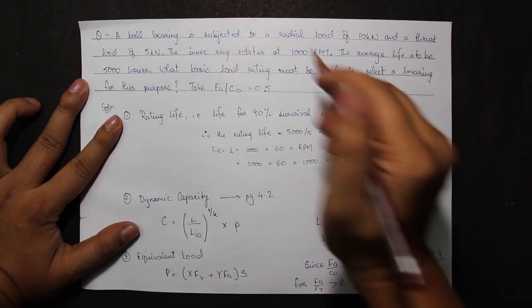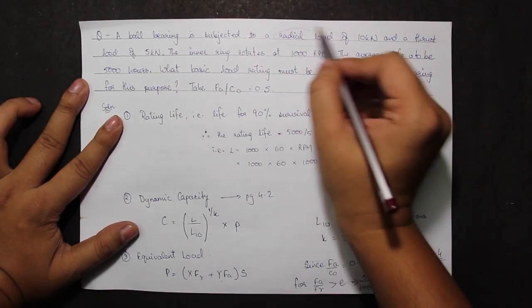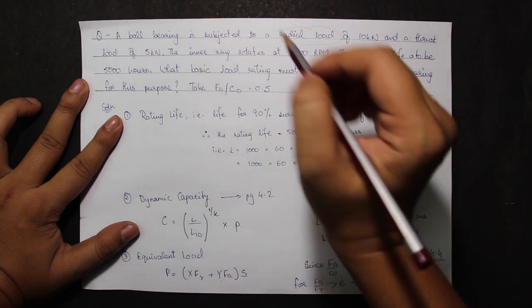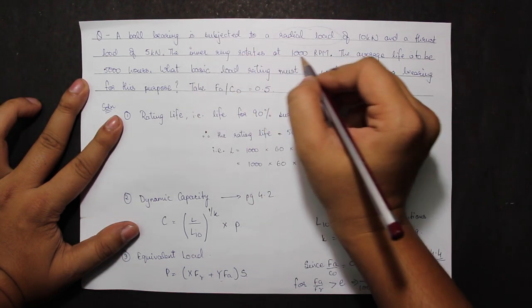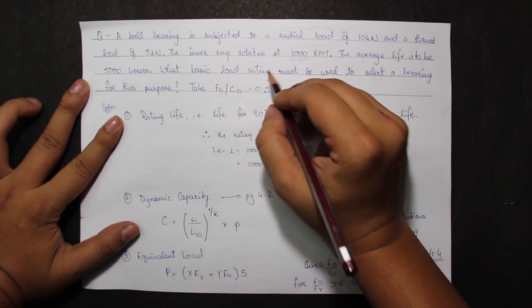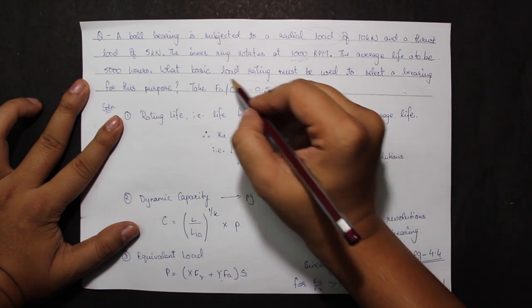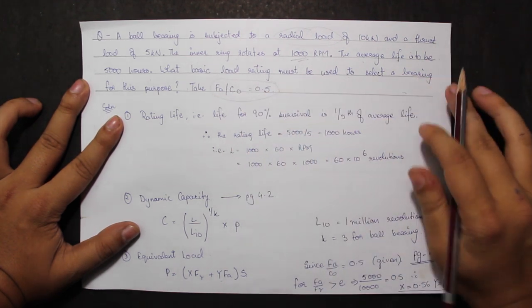The question states a ball bearing is subjected to a radial load of 10 kN and a thrust load of 5 kN. The inner ring rotates at 1000 rpm. The average life is to be 5000 hours. What basic load rating must be used to select a bearing for this purpose? Take FA by C0 is equal to 0.5.